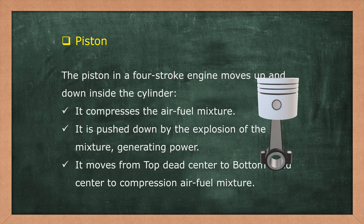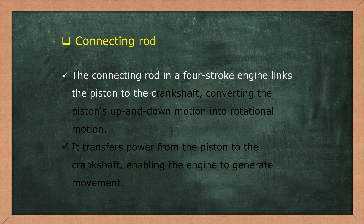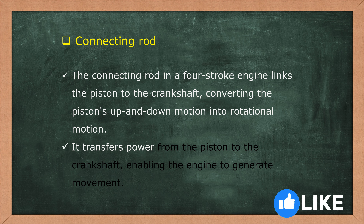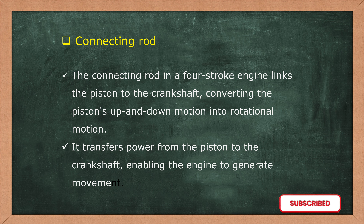After that, the connecting rod. The connecting rod in a 4-stroke engine links the piston to the crankshaft, converting the piston's up-and-down motion into rotational motion. It transfers power from the piston to the crankshaft, enabling the engine to generate movement, and allows the piston to move in an up-and-down motion.